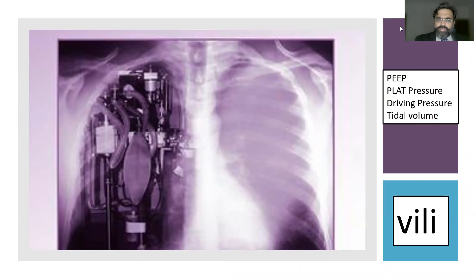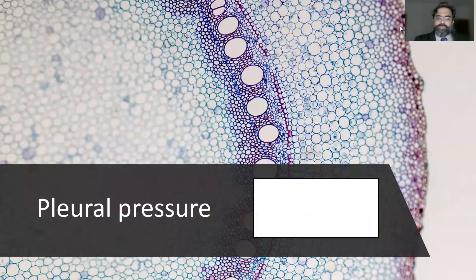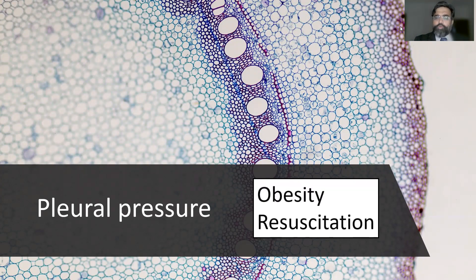By just using plateau pressure, driving pressure, or tidal volume alone, we cannot distinguish the pressure distending the lung from the pressure lifting the lung and chest wall together. That is why measuring transpulmonary pressure is very important — especially because pleural pressure varies considerably, particularly in obesity and after resuscitation. These are our two main ICU patient populations: obese patients and those who have been resuscitated.